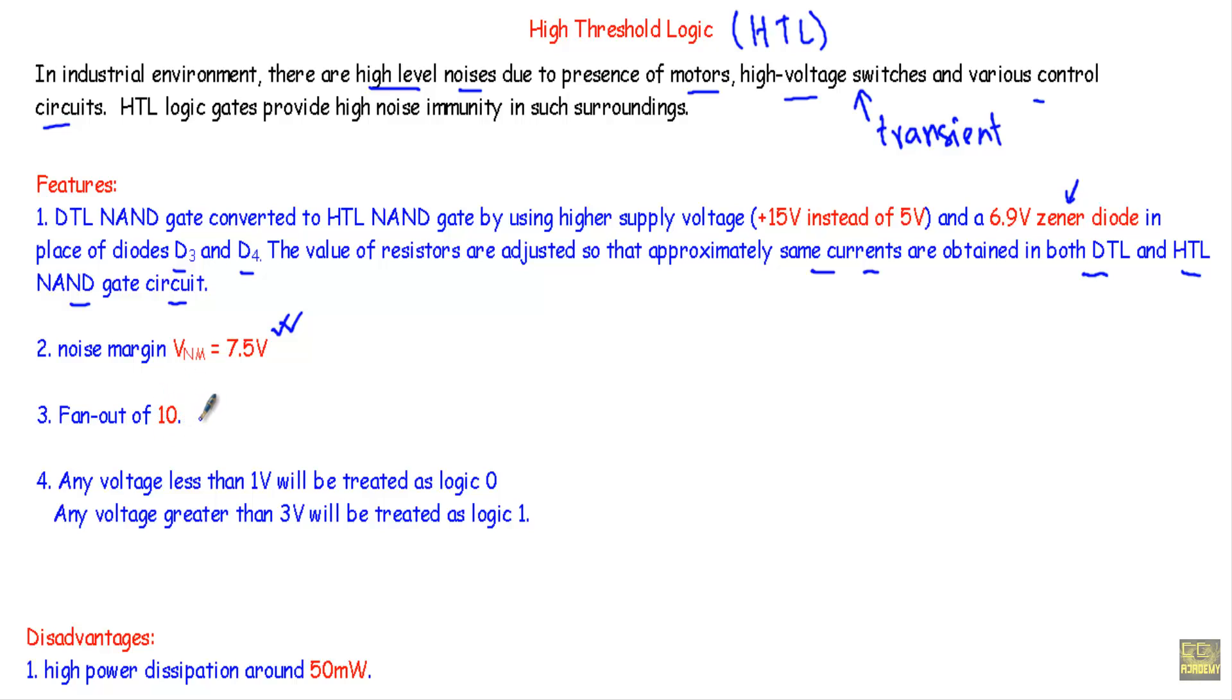Number four, any voltage less than 1 volt will be treated as logic 0 and any voltage greater than 3 volts will be treated as logic 1. Here for convenience to apply logic 1 I will apply a 5 volt DC voltage, and to apply logic 0 I will apply zero voltage, that means I will connect that terminal to ground.